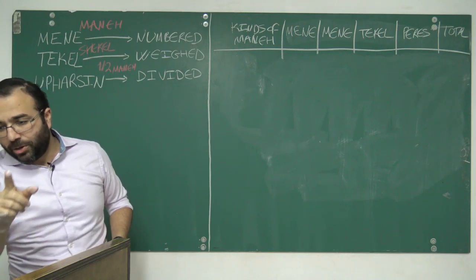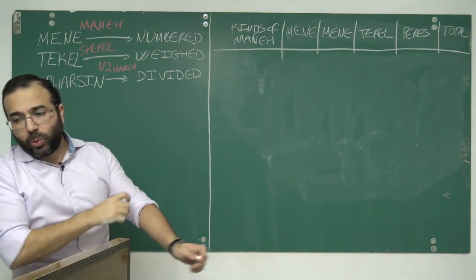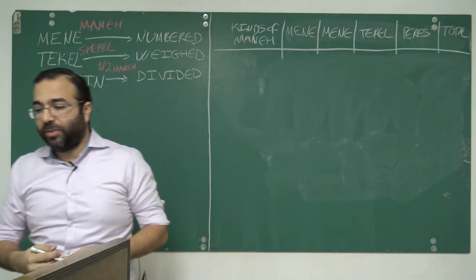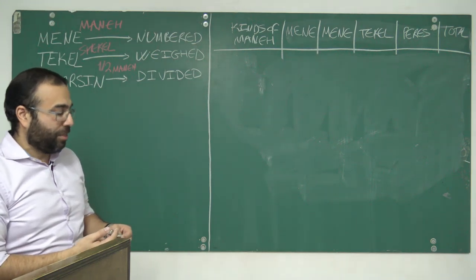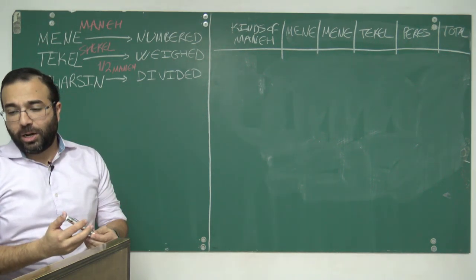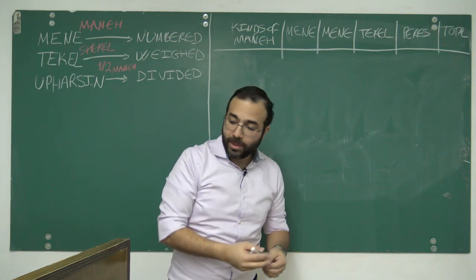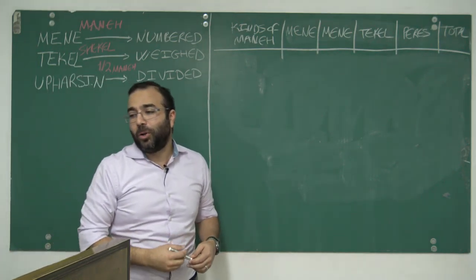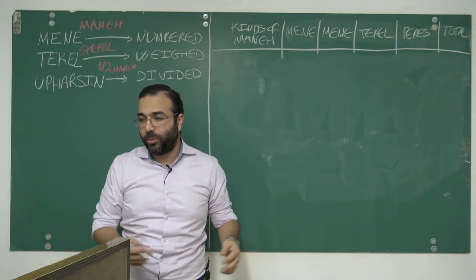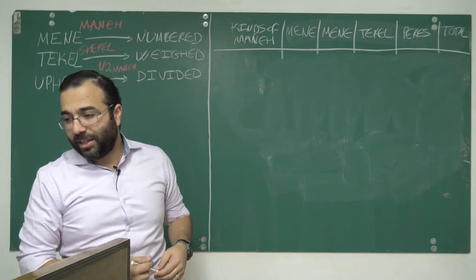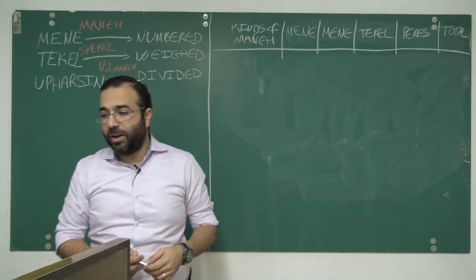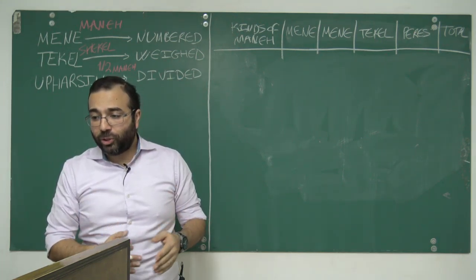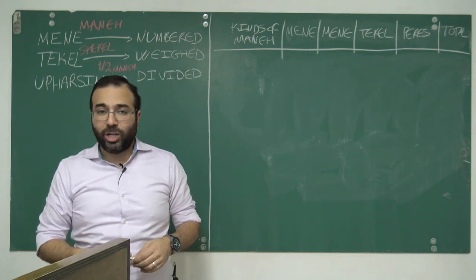Open up Daniel chapter 12 verse 7. When Daniel describes the length of the great tribulation, he says: I heard the man clothed in linen which was upon the waters when he held up his right hand and his left hand unto heaven and swear by him that liveth forever that it shall be for a time, times, and a half.